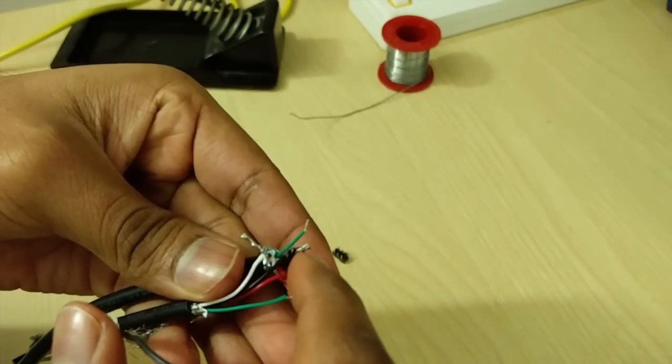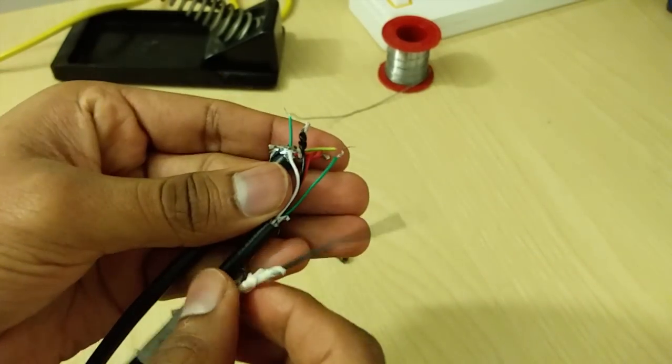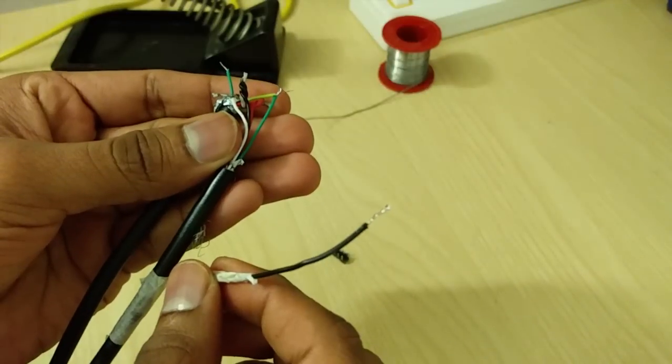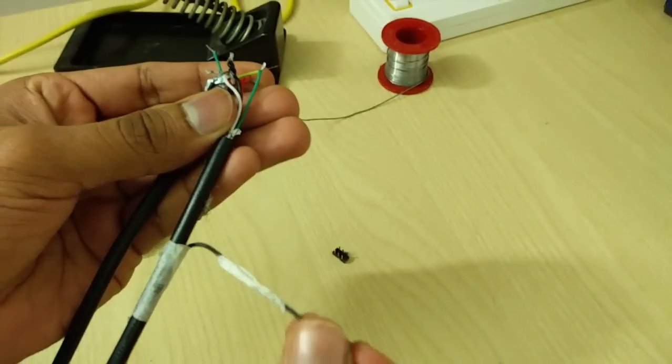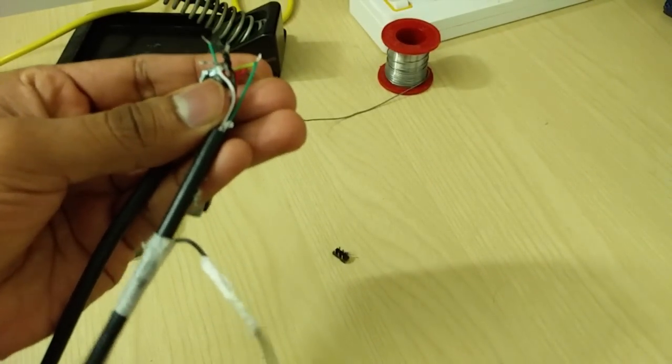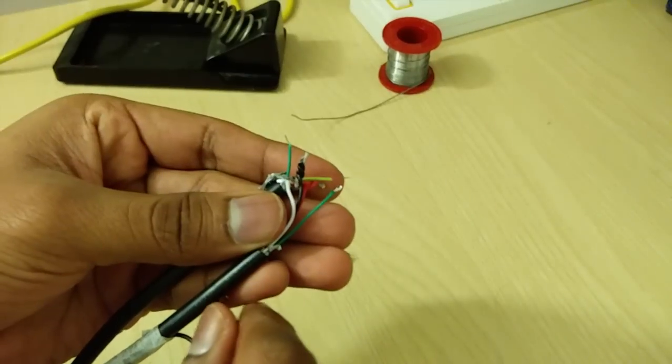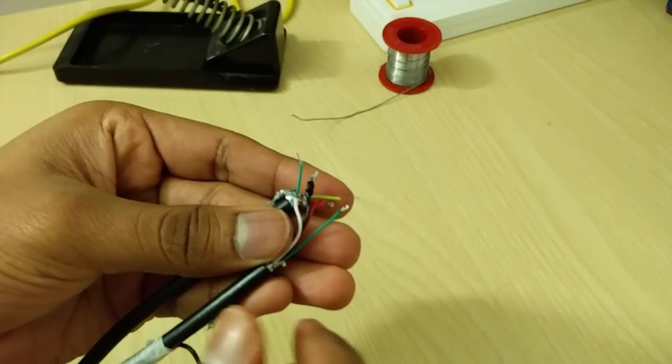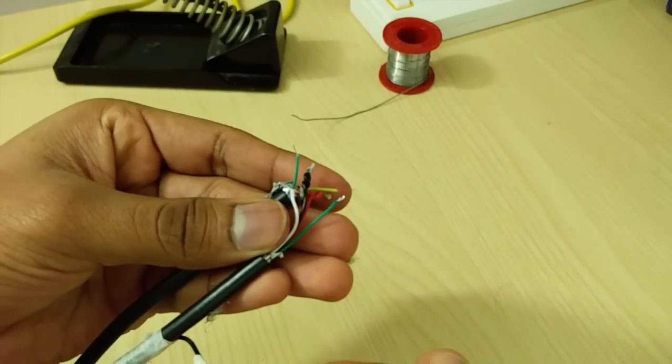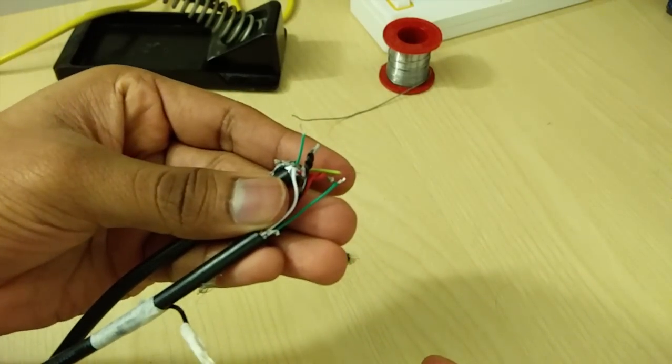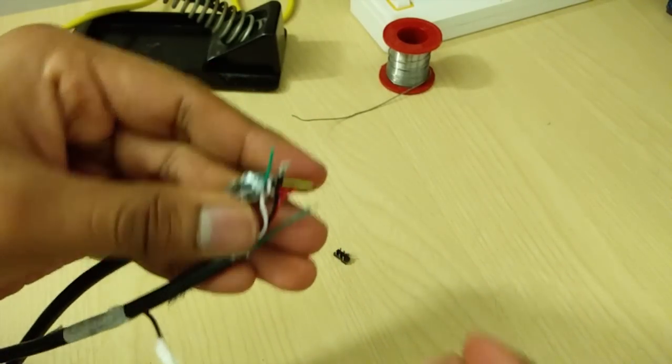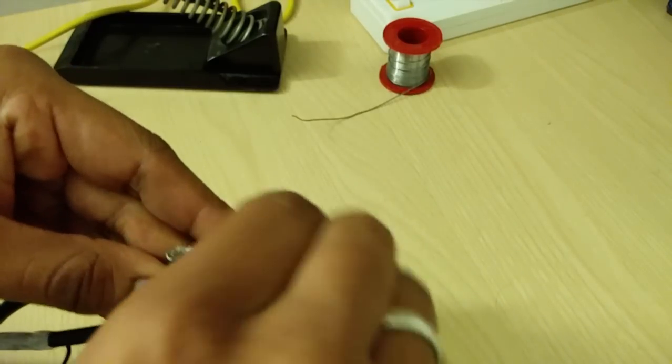Next step is to solder all the black wires together. Leave out the wire coming from the fourth pin of your micro USB or the ID pin. So just leave out this alone and solder all the ground wires together. That is the ground of the USB male, USB female and your micro USB. So solder all the ground wires together.